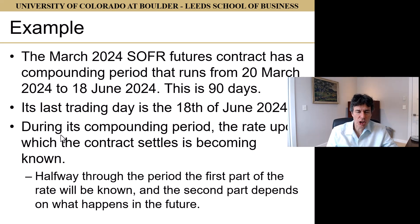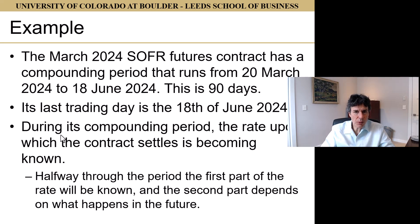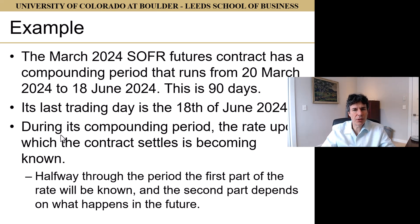Before March 20th — say on February 10th, 2024 — we don't know the rate at all; the market gives us an estimate of what that 90-day compounded SOFR rate is going to be. On March 20th, the rate starts to compound and becomes known. Halfway through the period, say early May, the first part of the rate is fixed, but from May 1st to June 18th it's not yet known. As we get closer to June 18th, the rate becomes more and more known and won't change very much.